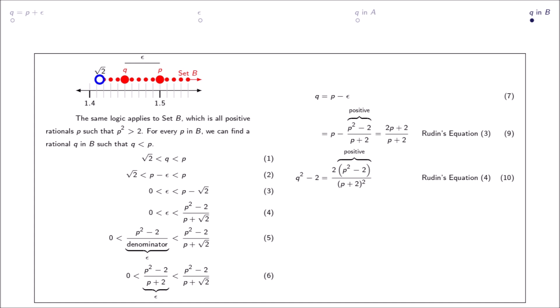Rudin's equation 3 and Rudin's equation 4. Equations 9 and 10 are the same as before. If p is in B, then p squared minus 2 is greater than 0.